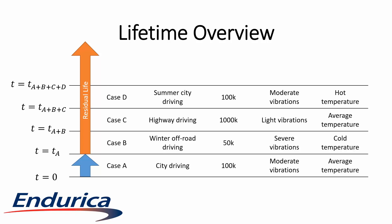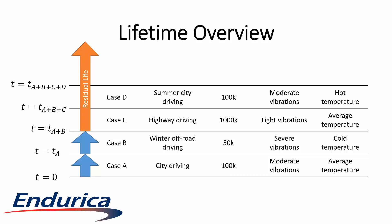The same nominal history will be used for all residual life calculations. Next, we will simulate case B, which represents winter off-road driving made up of 50,000 cycles of a severe vibration history. This analysis starts from the end of case A. Next, we are interested in the new residual life after the part has endured both cases A and B. This pattern continues with case C, which represents highway driving, and case D, which represents warmer city driving. Notice that these loadings are made up of three levels of vibrations: light, moderate, and severe.